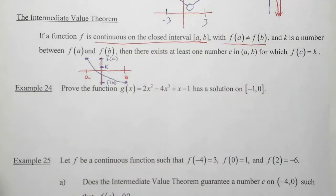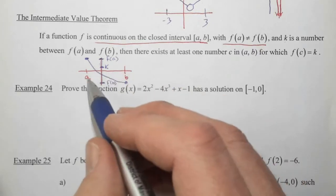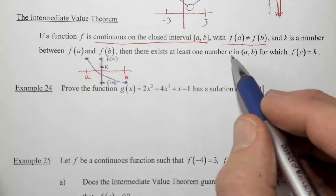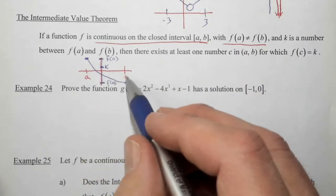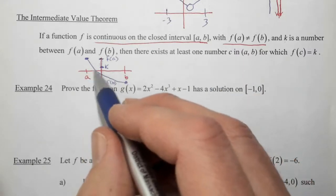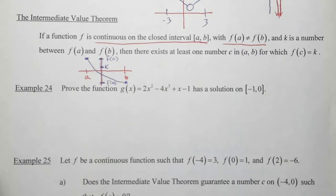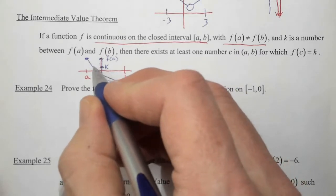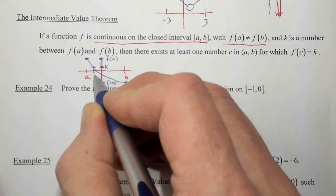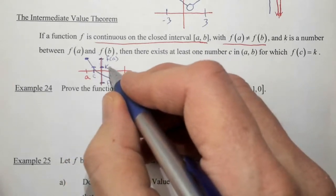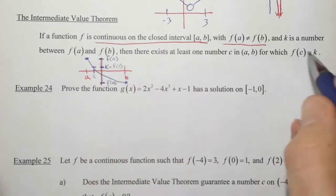What the intermediate value theorem states is that there has to be some spot on the x-axis, which they're calling c, such that the function at c is equal to k. So in other words, k seems to hit right here. So that means that our c is right there, so k is actually the same thing as f of c.